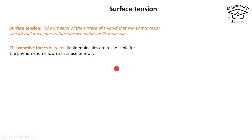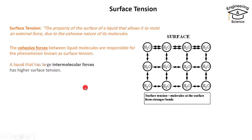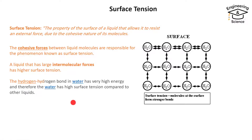The cohesive force between liquid molecules is responsible for the phenomenon known as surface tension. A molecule creates bonds with the surrounding water molecules, but for the surface layer there are no water molecules above to create a bond, so it creates stronger bonds with its neighbors. A liquid that has large intermolecular forces has higher surface tension.